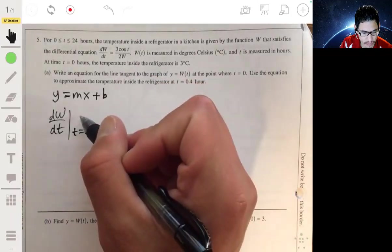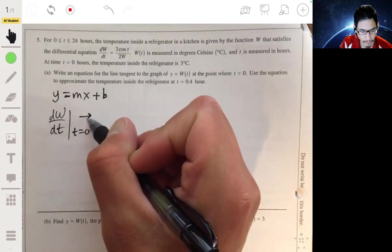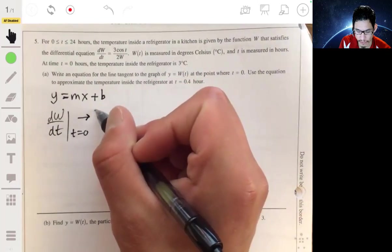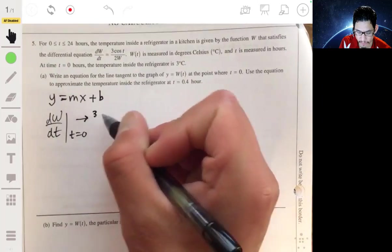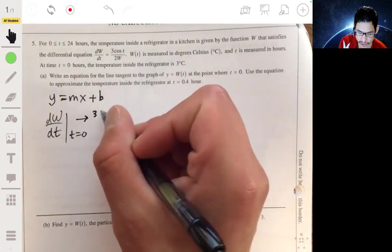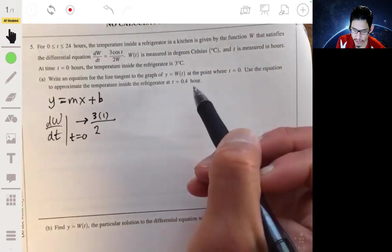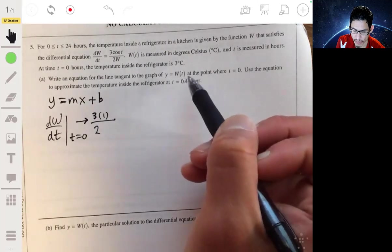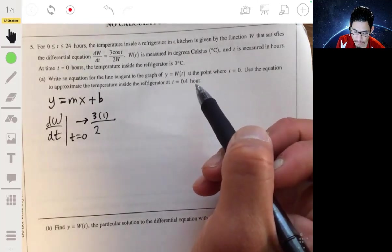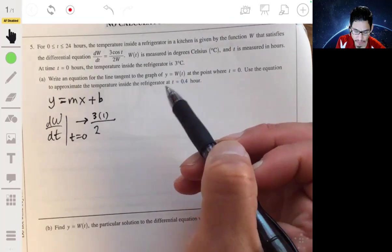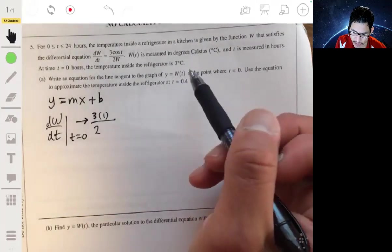And then that will be that we'll have 3 cosine of 0, or the cosine of 0 is 1, so 3 times 1 over 2 times W, and we're told that W of T is going to be the temperature.